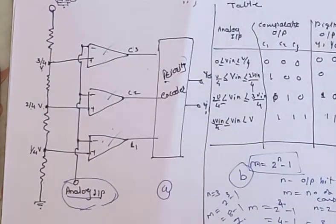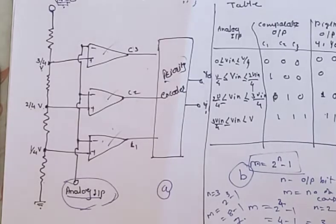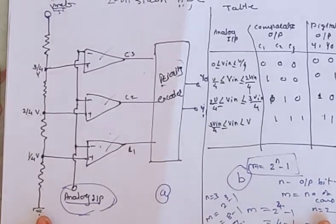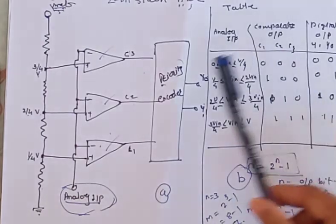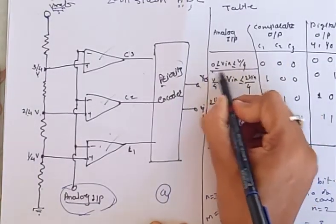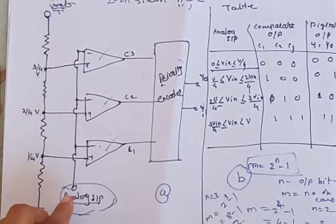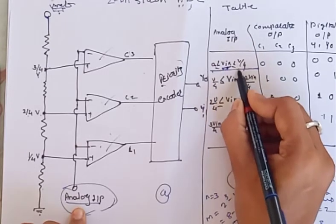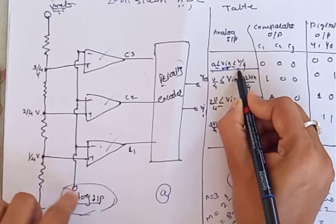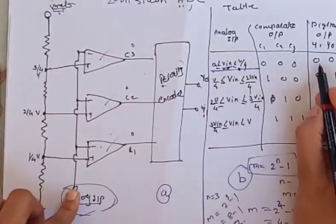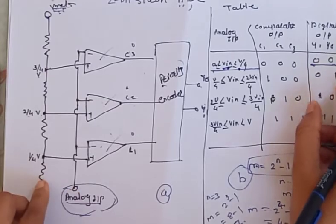Now let us look at the operating mechanism of the flash ADC using the truth table. Initially, when the analog input voltage Vin is greater than 0 but less than V/4, all three comparator outputs C1, C2, C3 are equal to 0, and the final digital output is 00.